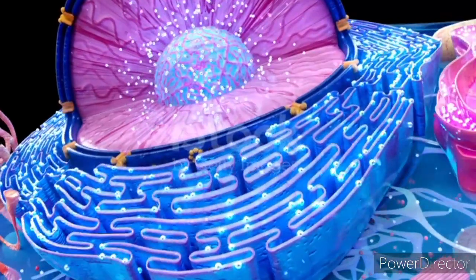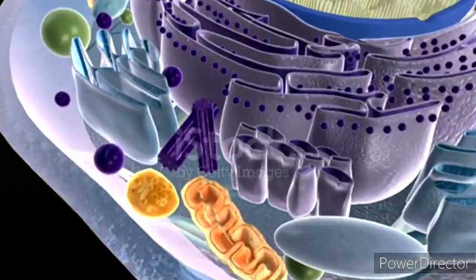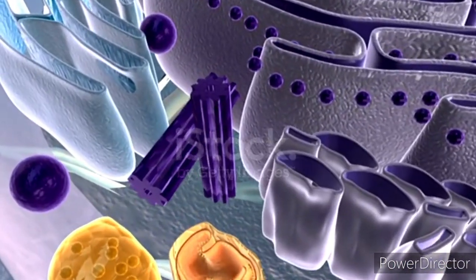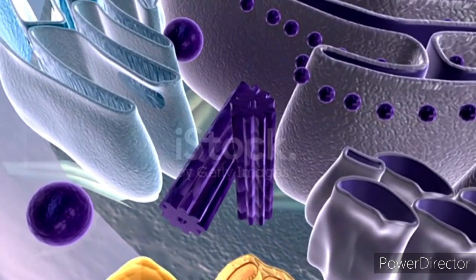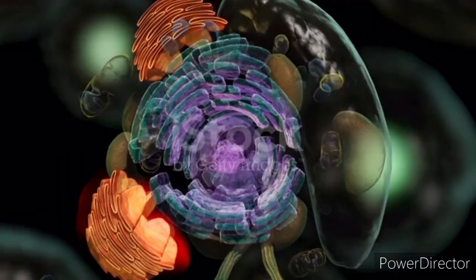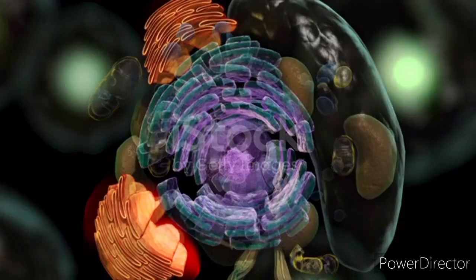Rough endoplasmic reticulum is primarily involved in protein synthesis, while smooth endoplasmic reticulum is more focused on lipid metabolism and synthesis.